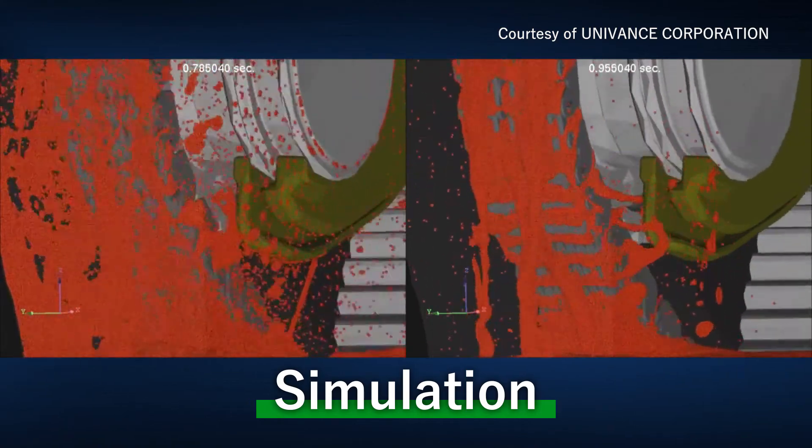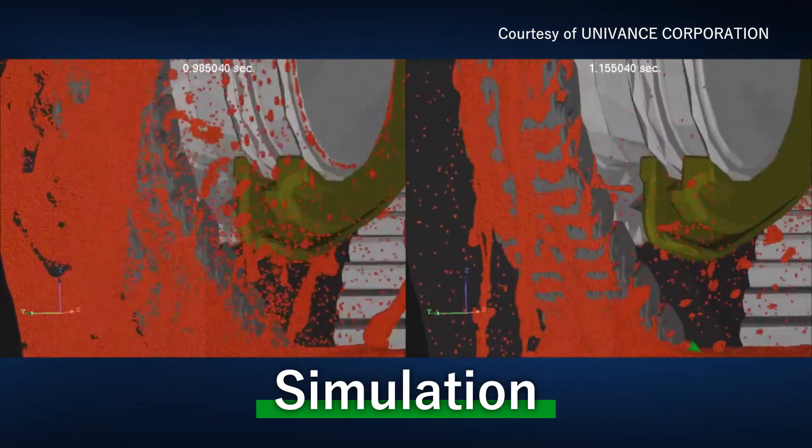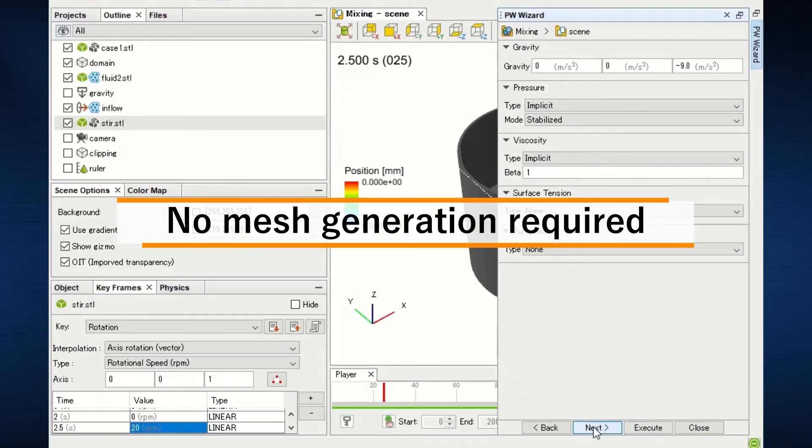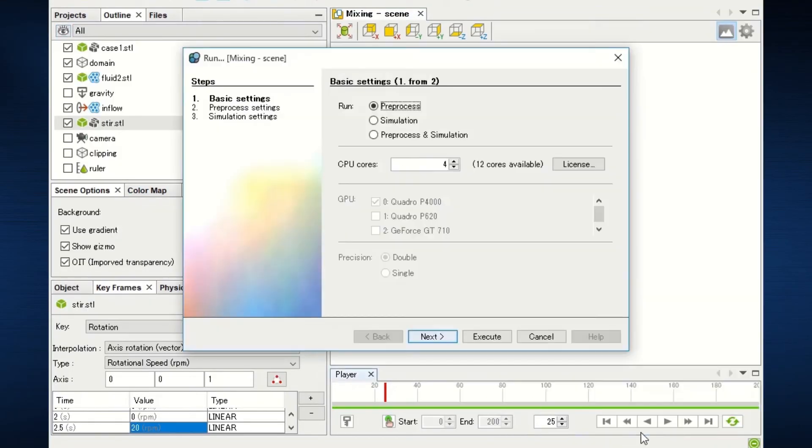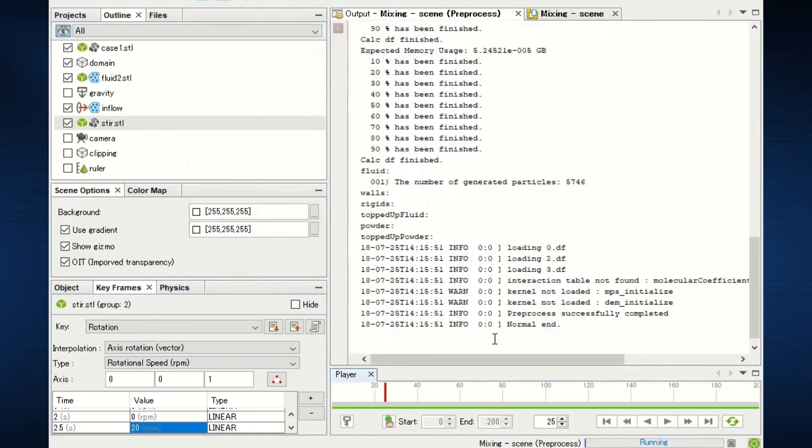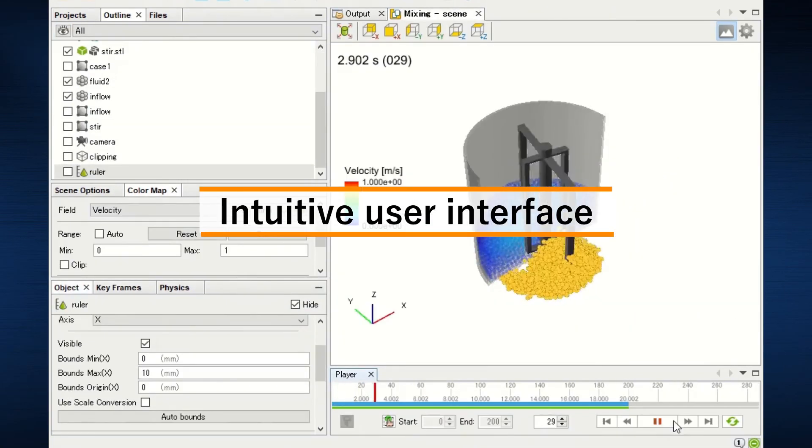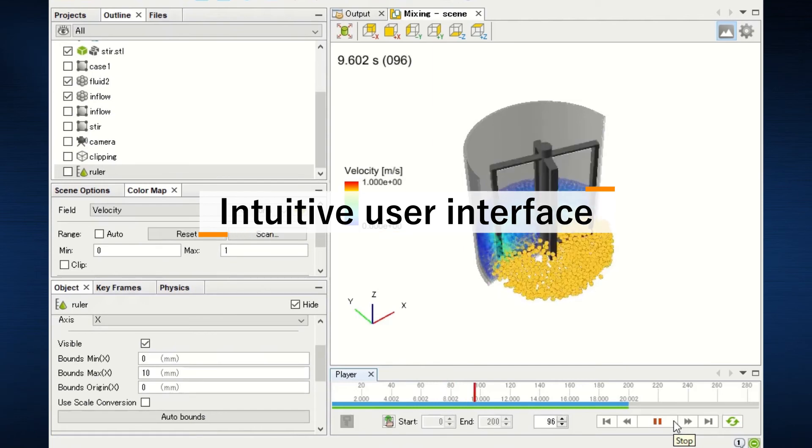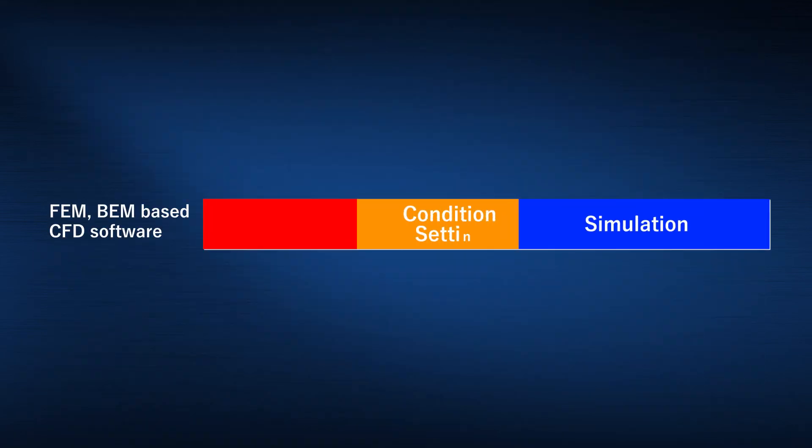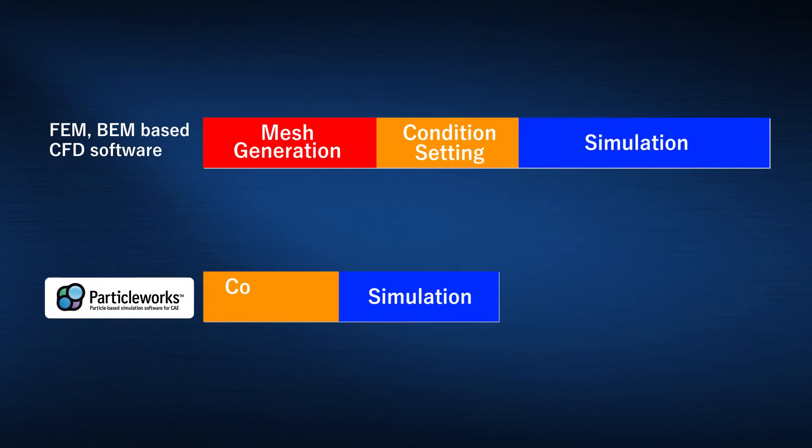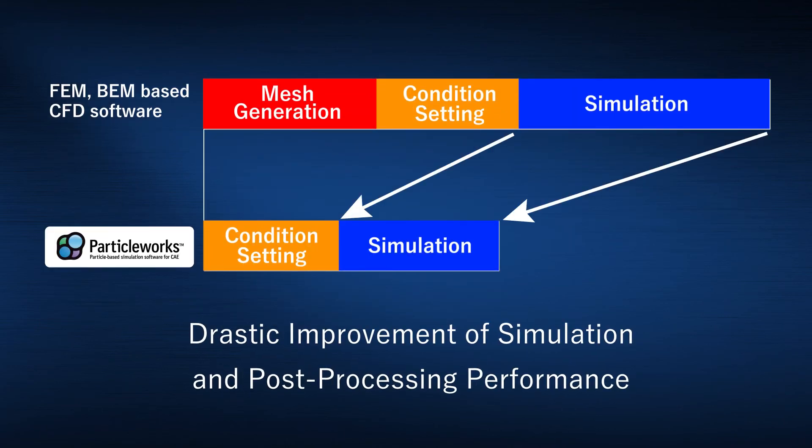The process of reviewing product design is greatly improved. Because ParticleWorks has an intuitive user interface and does not require mesh generation, users don't need to spend significant time creating simulation models. Supporting CPU multi-core and multi-GPU dramatically improves simulation and post-processing performance.